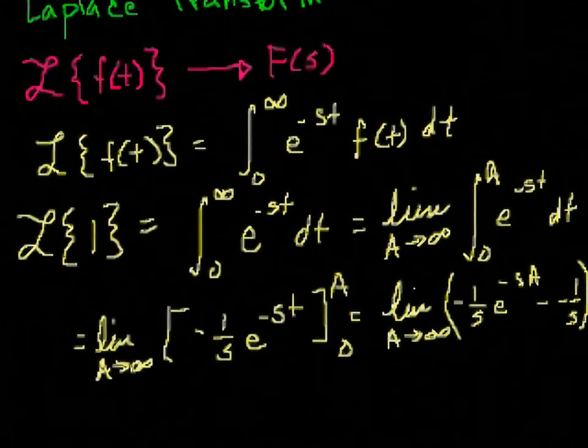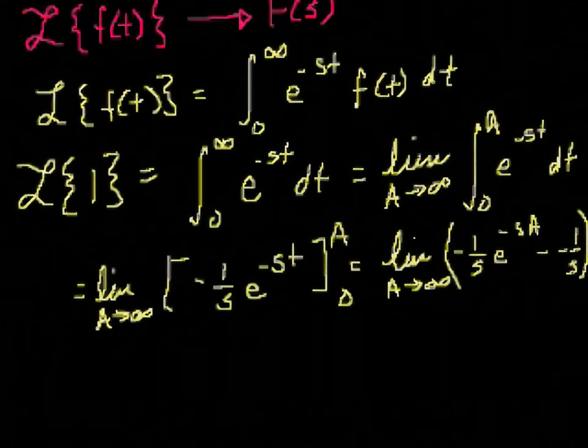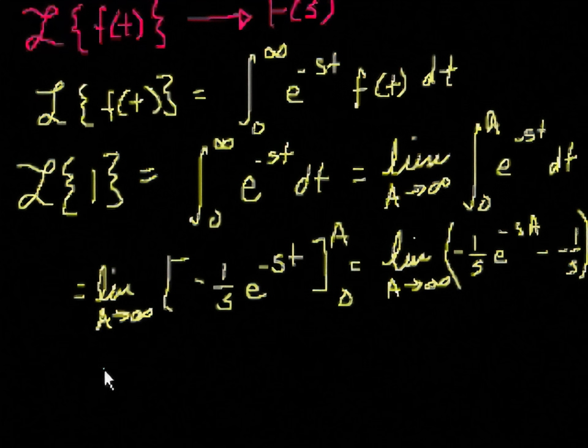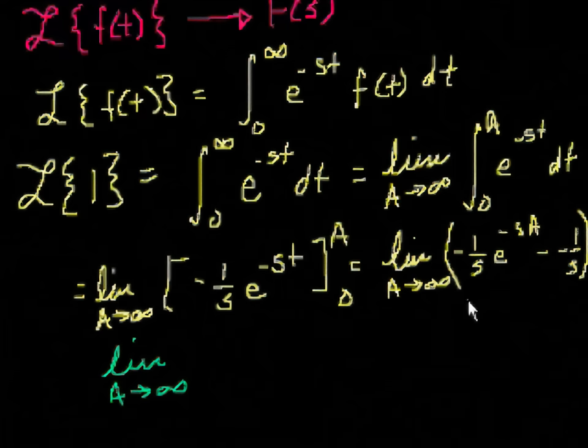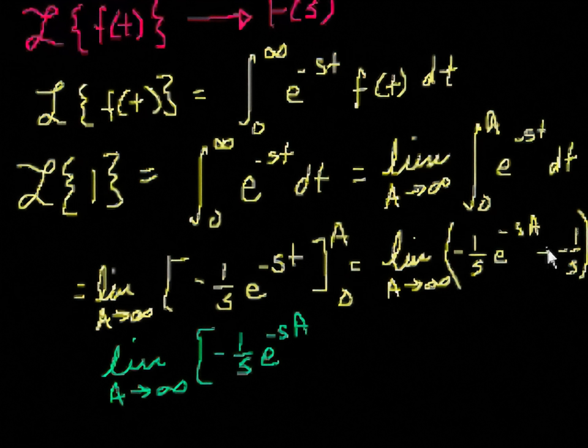And then let me scroll down a little bit. I wrote a little bit bigger than I wanted to, but that's OK. So this is going to be the limit as a approaches infinity of minus 1 over s e to the minus s a minus 1 over s. So plus 1 over s.